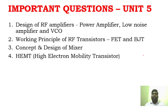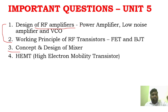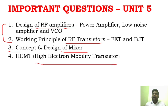Unit 5 is very important — you can find 4 questions but to be safe, realistically aim for 2 to 3 questions. If you do 4 questions, it's very safe. The important questions are: design of RF amplifiers, working principle of RF amplifiers, power amplifiers, FET and BJT RF transistors for these platforms, and concept and design of mixers. These are the important questions of Unit 5.